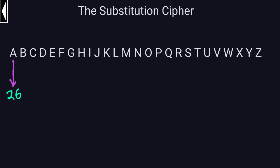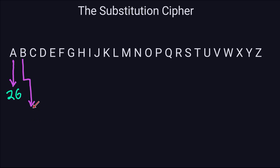Now let's think about what could happen to the letter 'b'. The letter 'b' needs to be transformed into another letter. But remember, one of the conditions of the substitution cipher is that you cannot use the same letter again — once I use a letter for 'a', I cannot use that same letter for 'b'. So the number of possibilities for 'b' reduces by one, giving us 25 choices.